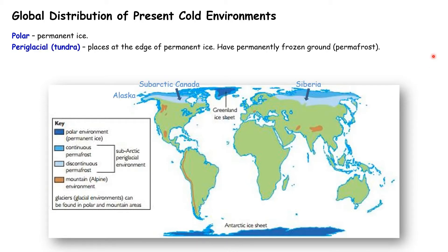Neighbouring these polar areas are the periglacial or tundra areas. These are at the edge of the permanent ice. They have frozen ground or permafrost, and they include Siberia, subarctic Canada and Alaska.